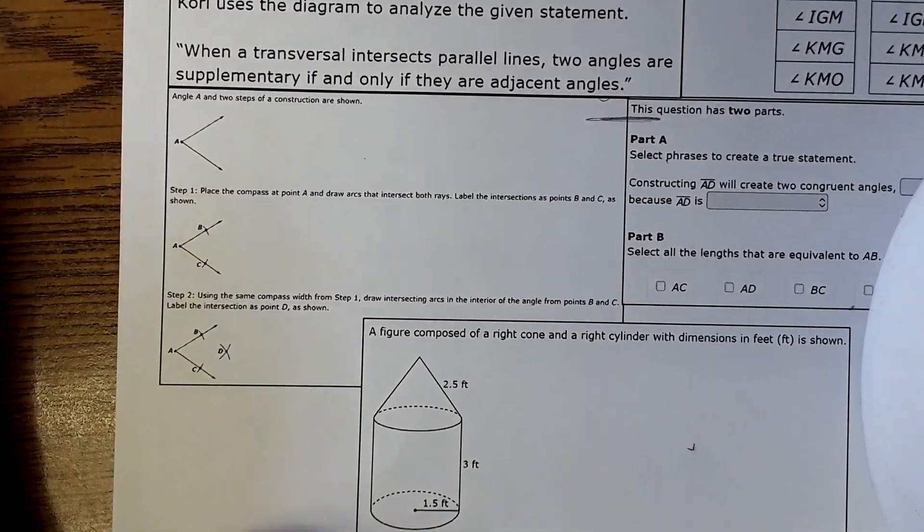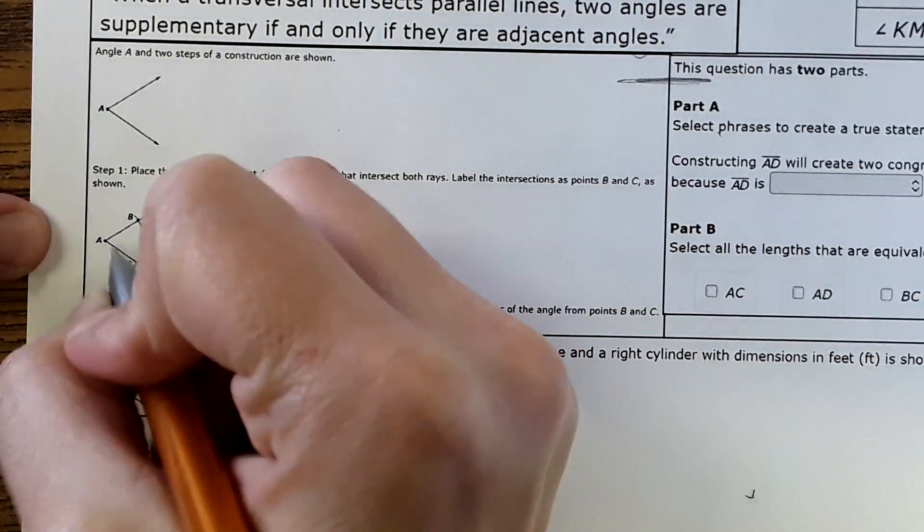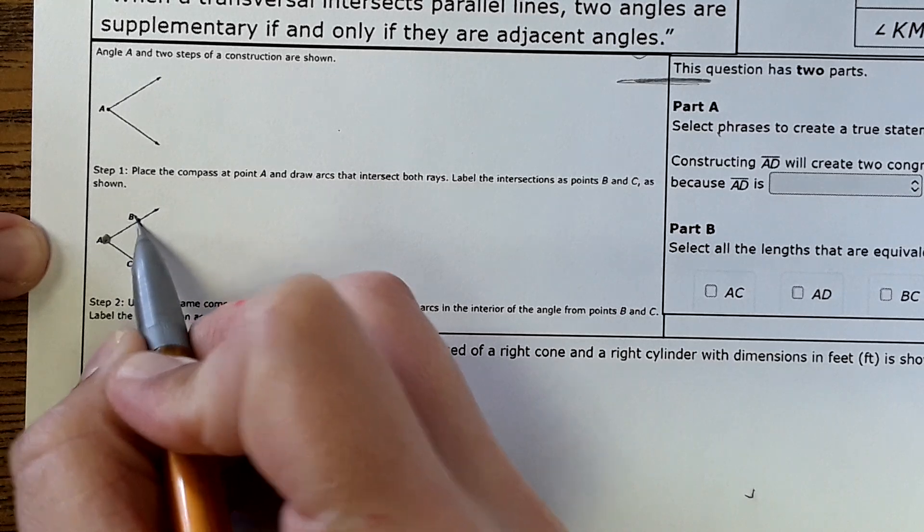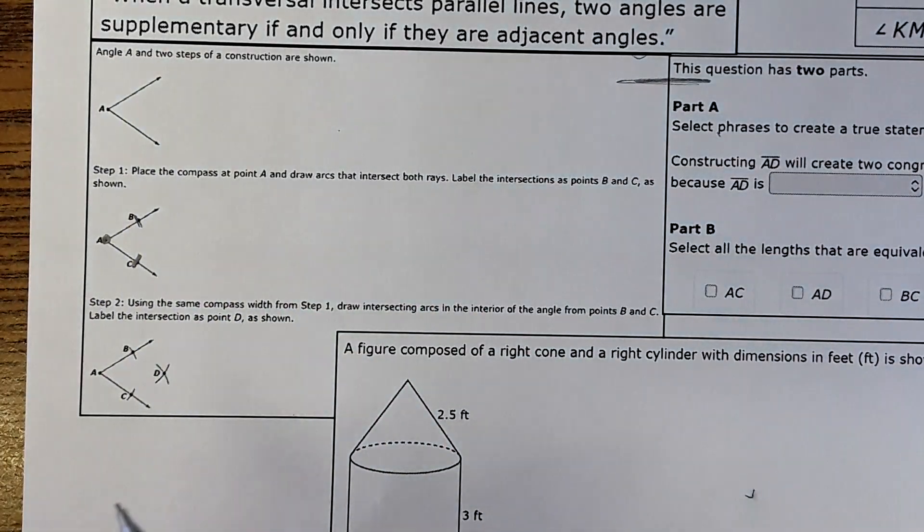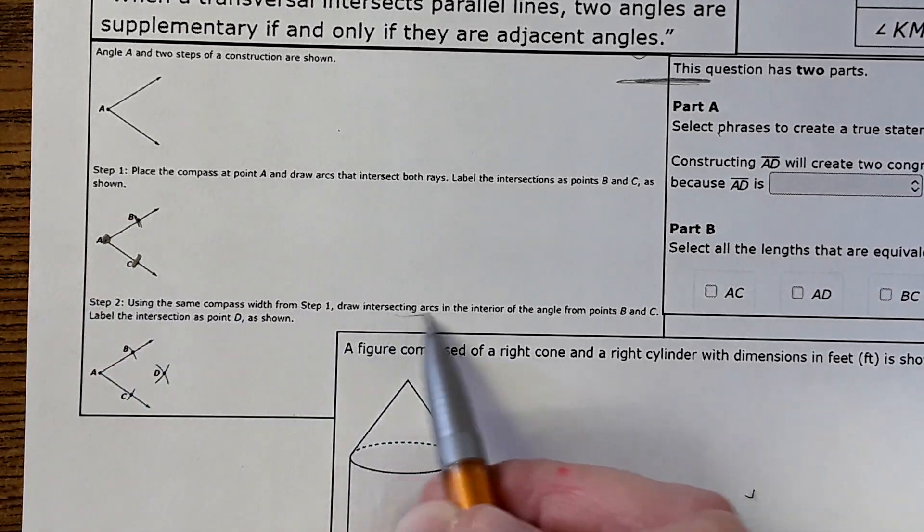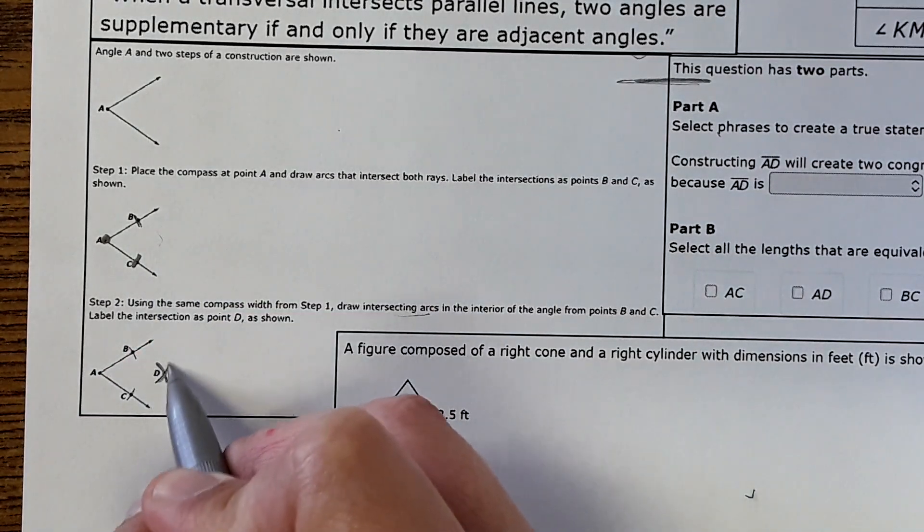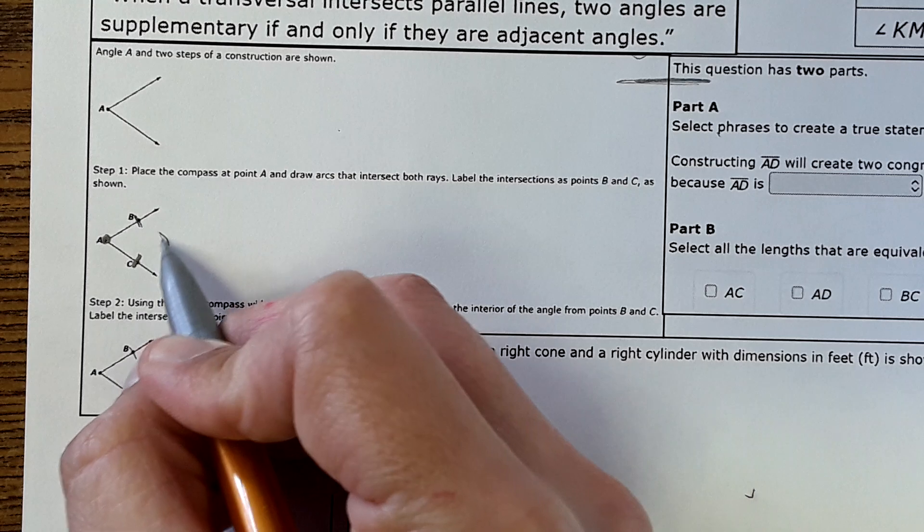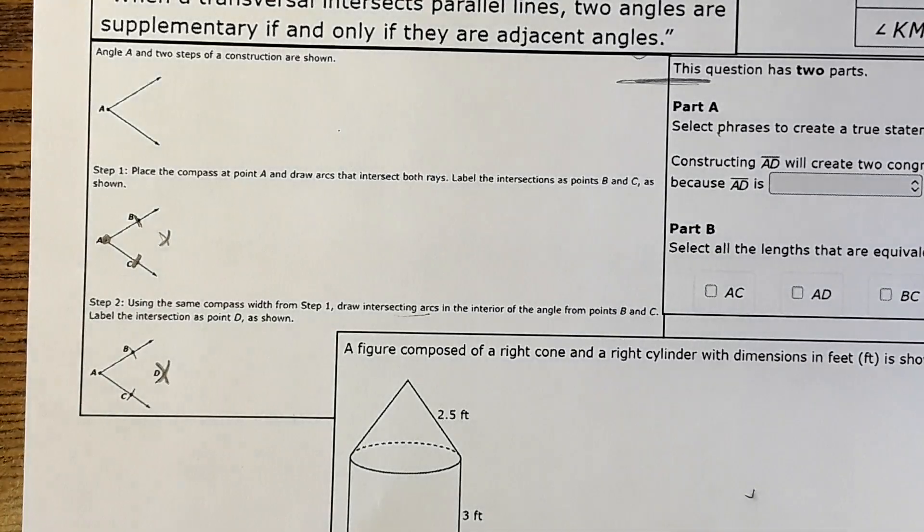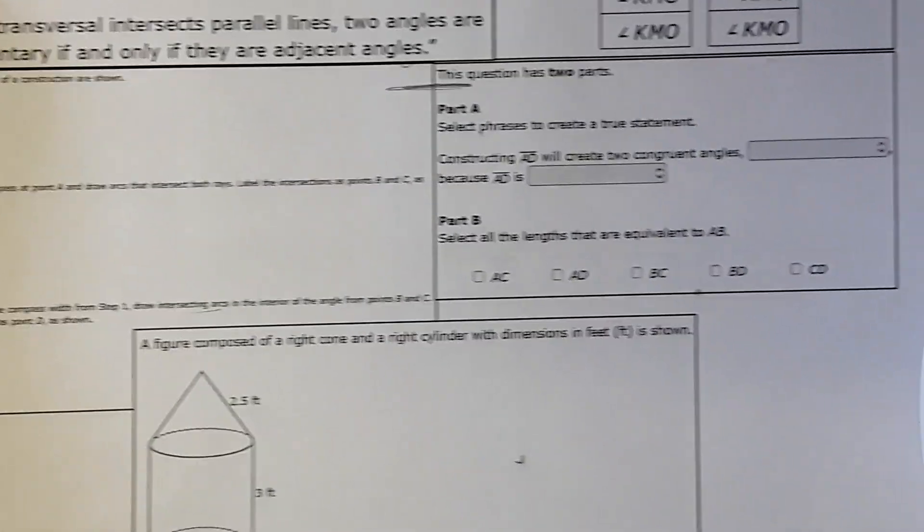Looking over here it says angle A and two steps of the construction are shown. Step one: they place the compass on A and draw arcs that intersect both rays. They made a mark right here and right here using the compass. Then using the same compass width from step one draw the intersecting arc. They put the compass here and made an arc here, and from here they would do it here and got point D.